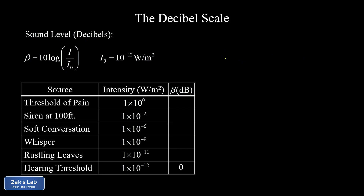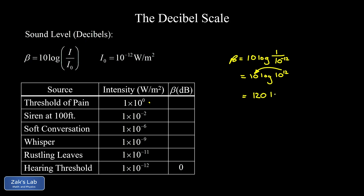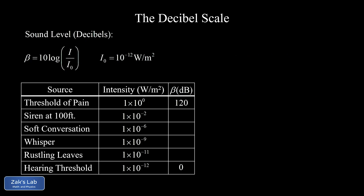Now for the threshold of pain at the top of the scale: β is 10 times the log of 1 watt per square meter divided by 10 to the negative 12. That gives us 10 times the log of 10 to the 12th. Using the exponent property of logs, we bring that 12 out as a factor, giving 10 × 12 = 120 times log base 10 of 10. Since log base 10 of 10 is 1, we get 120 decibels.